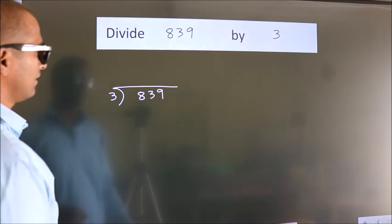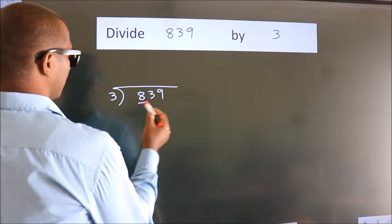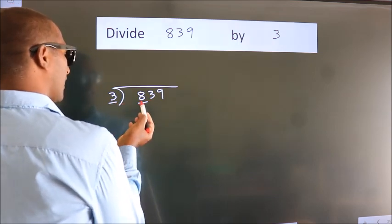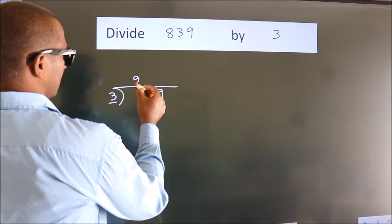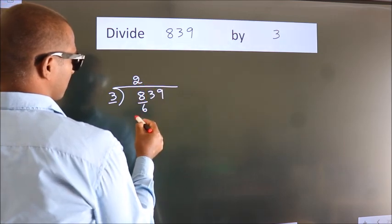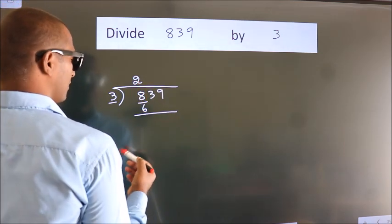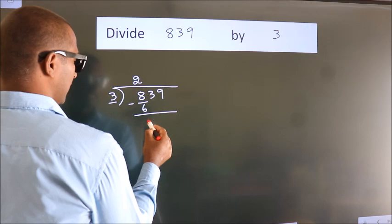Next, here we have 8, here 3. A number close to 8 in 3 table is 3 2s, 6. Now, we should subtract. We get 2.